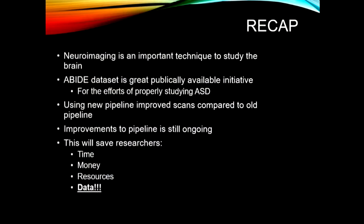Just to give a recap: neuroimaging is a very important technique. MRI scans allow us to see the brain without having to cut it open. But as I mentioned, MRI scans are very expensive, very technical, hard to run, and processing the scans takes a lot of energy and manpower. The ABIDE dataset is a great publicly available initiative — it has about 2,000 subjects, which saves a lot of money and time. It's also really hard to get subjects diagnosed with autism and typically developing subjects because you've got to go through a whole protocol to get them into the scanner.